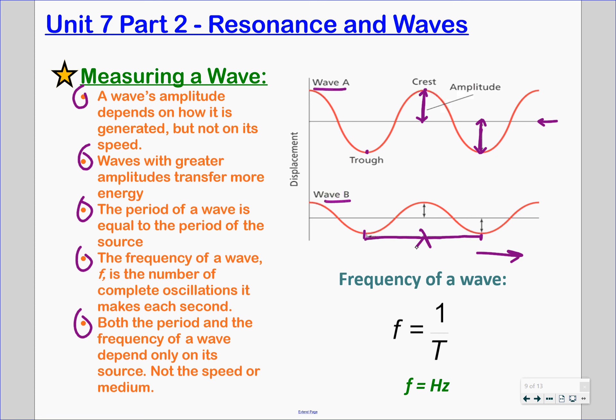A wave's amplitude depends on how the wave is generated, not necessarily the speed. So the amplitude and the speed are independent of each other. Waves with greater amplitudes transfer more energy. So you need to understand that. The larger the amplitude, the larger amount of energy the wave is carrying. The period of the wave, which we know is the time that it takes to complete one cycle, is equal to the period of the source. So whatever the wave is coming from, those periods of the source and the waves will match. Your frequency of the wave is the number of oscillations per second. So over here we have a formula for frequency. It is one divided by the period of that wave or of that source. Our unit for frequency is hertz. So you can see that here and add that to your formulas for this unit. And just so we are understanding, both the period and the frequency of the wave depend on the source. They do not depend on the speed or the medium. So keep those ideas independent of each other.